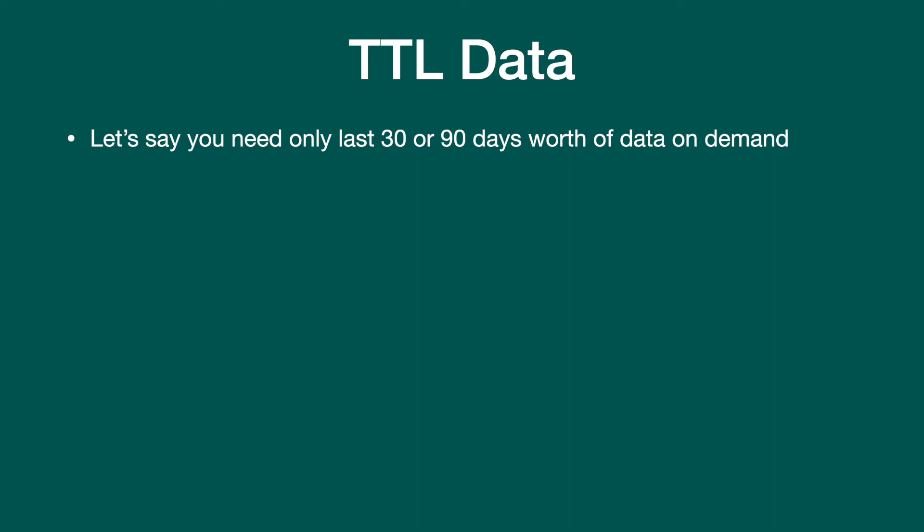Say in your application you have a graph where you show the location of each truck for the last 30, 60, or 90 days. After 90 days, you don't really need the data in Cassandra — maybe you need it somewhere else, but not in Cassandra. In that case, when writing data into Cassandra you can insert it with a TTL of 30 or 90 days.